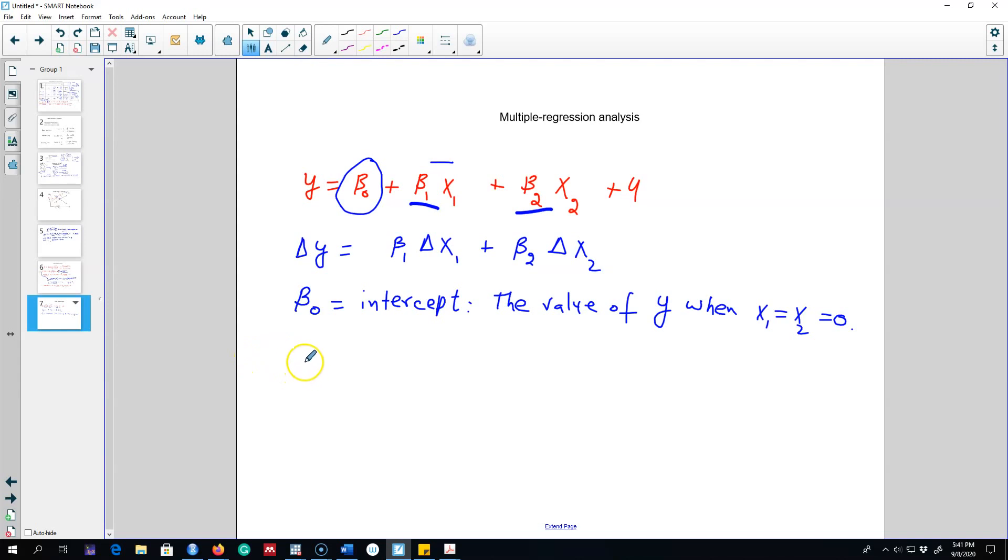Now the interpretation of beta 1 and beta 2 are a little bit trickier here. Beta 1 shows the change in y with respect to x1 holding x2 constant.